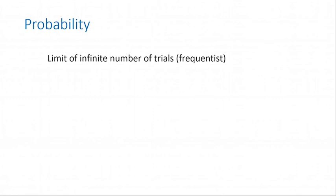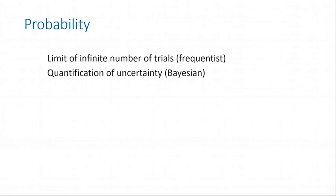We all learn about probability in school in a particular narrow context — the frequentist context — where probability is the limit of an infinite number of trials. But there's a much more general perspective on probability as a quantification of uncertainty. If you try to ascribe numerical values to uncertainty in a logically consistent way, it turns out those numbers obey exactly the same rules as the numbers describing coin flips. Probability is a quantification of uncertainty — that's the Bayesian perspective.